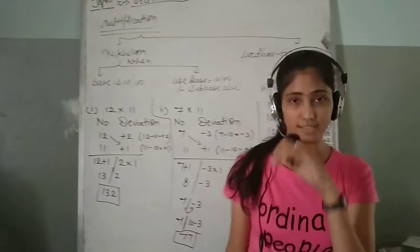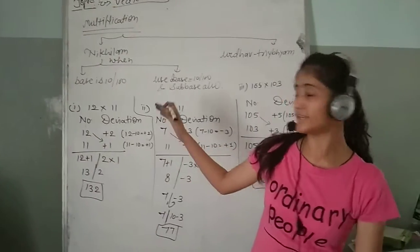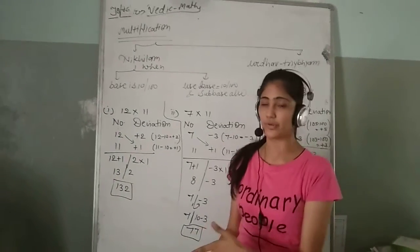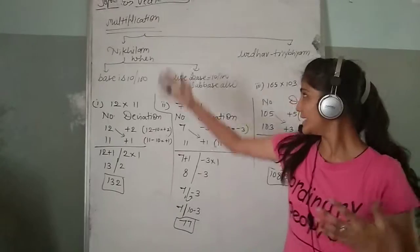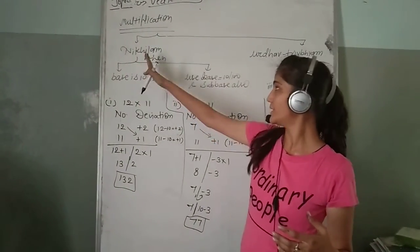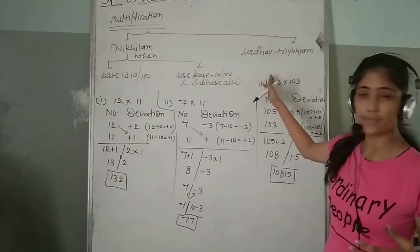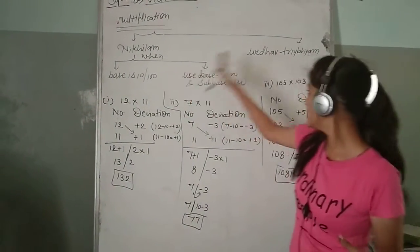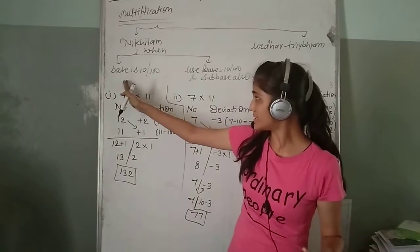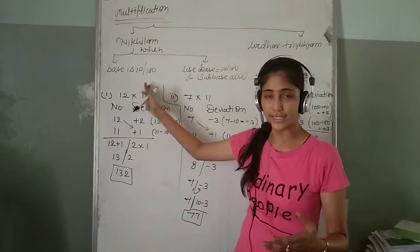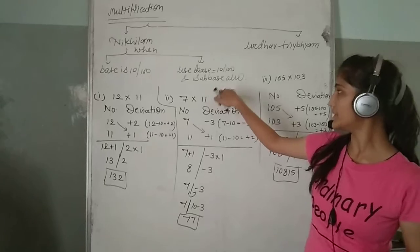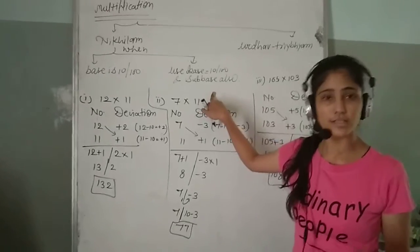In Vedic Maths, before this class we understood subtraction using the Nikhilam process. Here we try to understand multiplication. There are two types of multiplication methods: Nikhilam and Urdhva-Tiryabhyam. Nikhilam is used when the base is 10, 100, 1000, or similar numbers. When needed, we use the sub-base also.